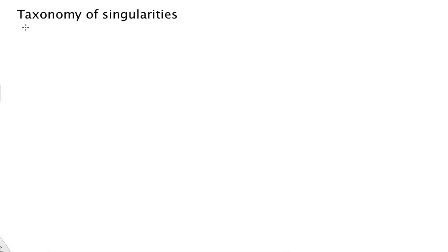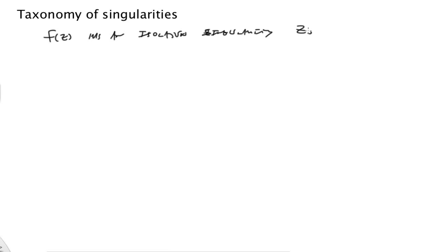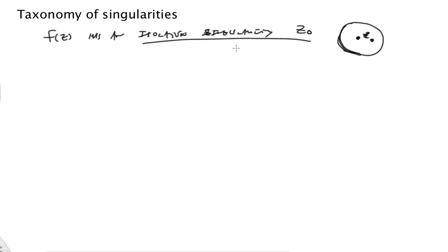Welcome. Today we're going to be talking about the taxonomy of singularities. As we've seen before, if I have some f of z that has an isolated singularity at z-naught — and we'll always be talking about isolated singularities — that means if I have some z-naught in the plane, I can put a deleted neighborhood around it where no other singularities are present. So that just means I can always analyze it in isolation.